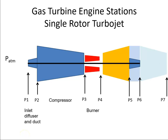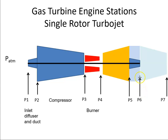The engine is broken down into a number of different stations and they're all numbered. For a single rotor turbojet, we have station one just before the engine inlet, station two at the engine inlet, station three at the compressor outlet, station four at the combustion outlet, station five at the turbine outlet, station six at the nozzle inlet, and station seven at the nozzle outlet or exhaust.